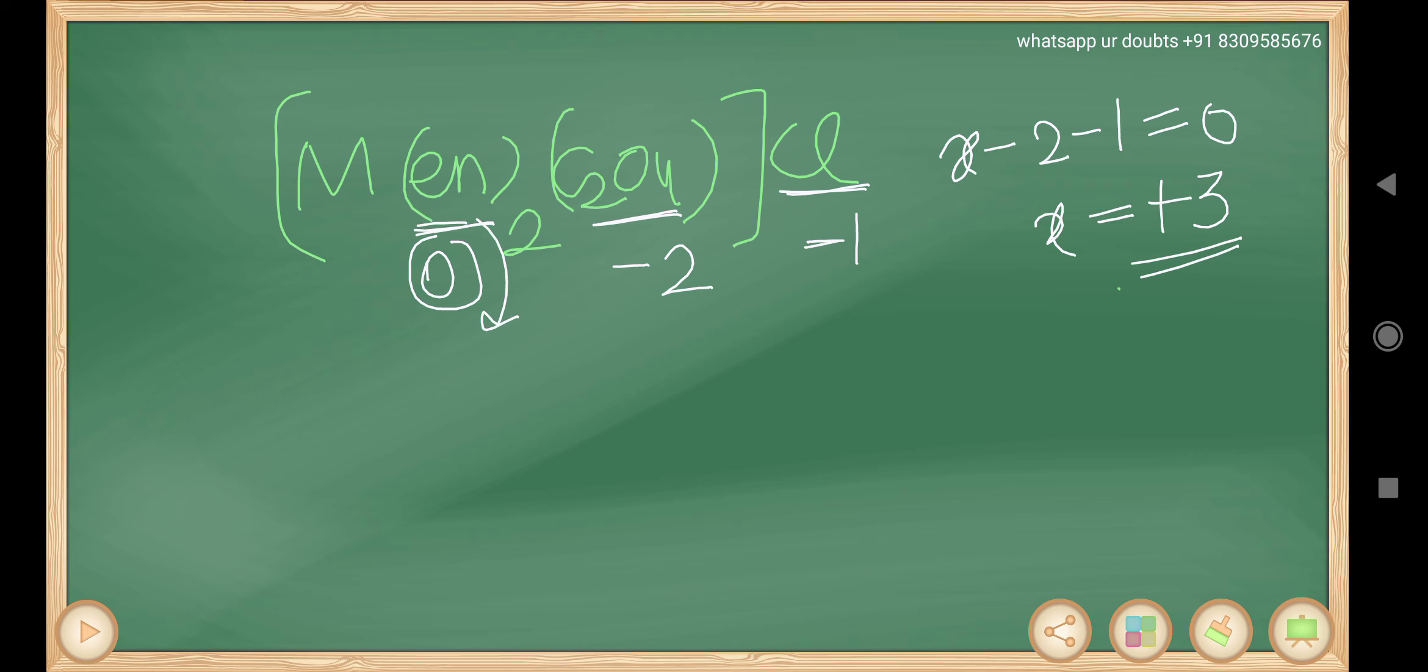And ethylenediamine is a bidentate ligand. C₂O₄ minus two is also bidentate ligand. So total number of ligands are three. Each bidentate is three into two, so six is the coordination number. Plus three is the oxidation state. So six plus three equals nine.